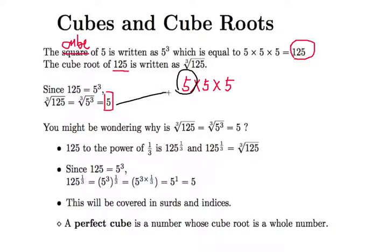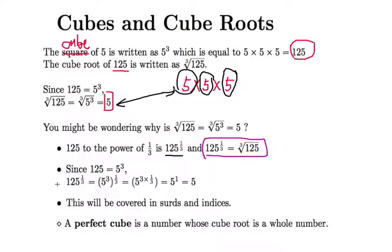Think of it as groups: cube root means you take from three equal groups, one of them. You can also write cube root of 125 as 125^(1/3) — it's the same thing. Since 5³ = 125, we have (5³)^(1/3), and 3 × (1/3) = 1, so the answer is 5¹ = 5.